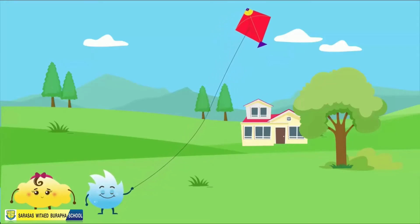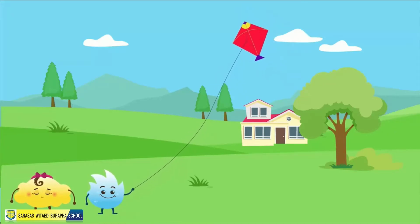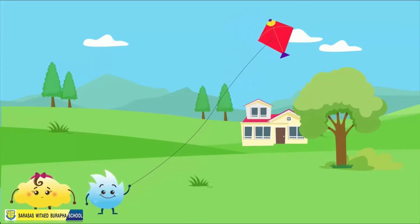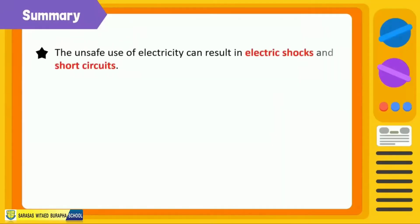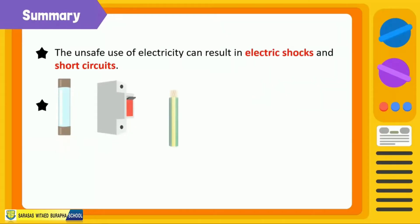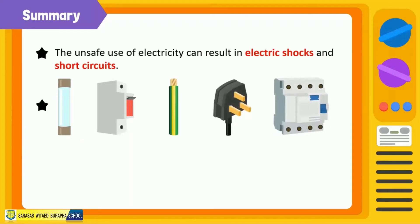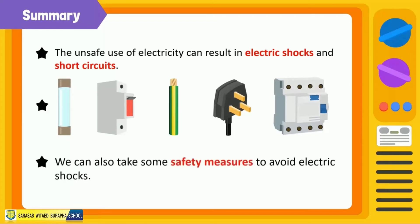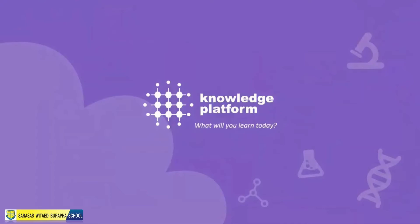After learning about the safety measures for using electricity, Spikey and Bubbles are now flying the kite in an open ground, nowhere near the power cables. To summarize: unsafe use of electricity can result in electric shocks and short circuits. Devices such as fuses, MCBs, earth wires, three-pin plugs, and ELCBs ensure that we can use electricity safely, and we can also take safety measures to avoid electric shocks.